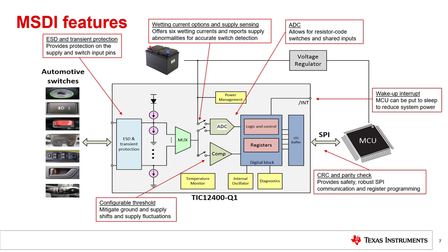The Cyclic Redundancy Check feature is available as a safety feature. It is a way for the system to detect any former configuration change through corruption of the configuration register, such as from an unexpected voltage drop or noise spur on the reset pin, or potentially even some unwanted access such as a hacking event, that could result in switches not being properly detected. This feature enables robust SPI transactions and ensures proper register programming in the noisy automotive market. In the TIC12400Q1 and TIC12400, ADC self-diagnostics are available to monitor the integrity of the internal ADC. Wetting current diagnostics are also available to make sure the wetting current is flowing accurately. Both are useful in safety-critical applications.